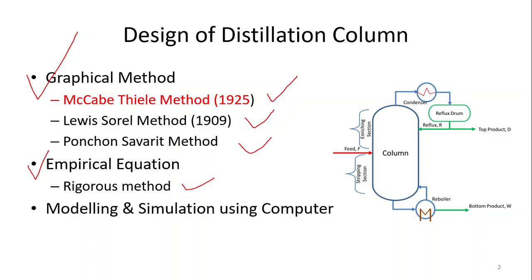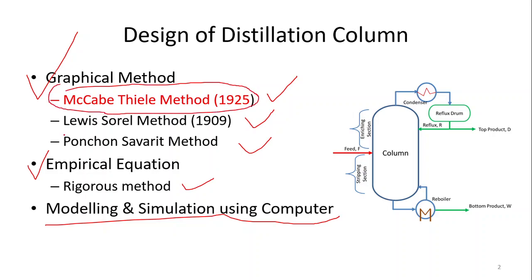The third method is a part of the empirical equation: that is the modeling and simulation method, where we model the distillation column equations and simulate using some software on the computer. In our discussion, we are only concerned about the McCabe-Thiele method design, and we will also briefly cover the Ponchon-Savarit method. We will discuss these two graphical methods, which are the simplest methods for distillation column design.